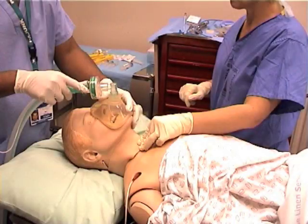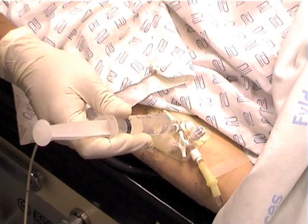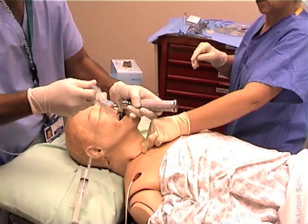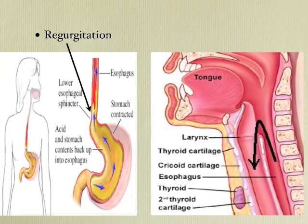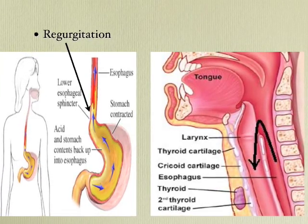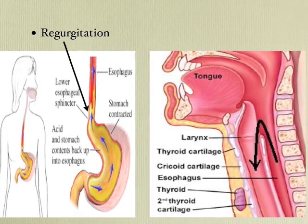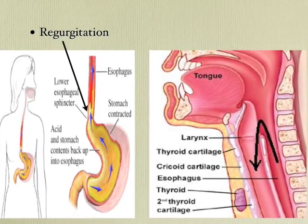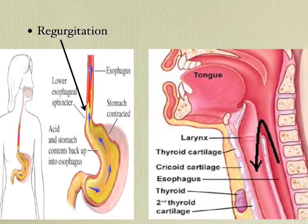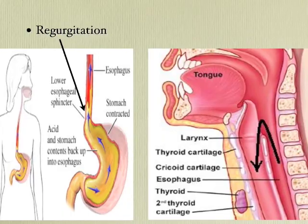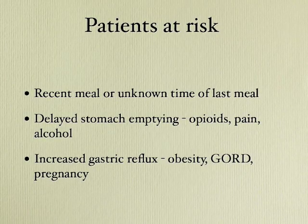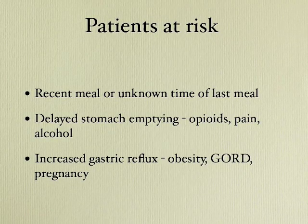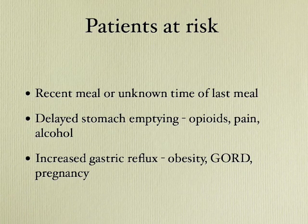Rapid Sequence Induction is a method of inducing anesthesia in a selected group of patients. On induction of anesthesia, the lower esophageal sphincter relaxes, thereby increasing the risk of aspiration of stomach contents. Certain patients are assumed to have a full stomach and therefore are at increased risk of aspiration and regurgitation.